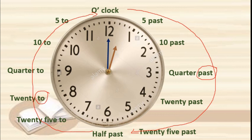And when the minute hand reaches 12, the hour hand will be on 1, so it is 1 o'clock. This direction is called the clockwise direction. When the minute hand moves from 12 to 6, we use the word 'past'. When it moves further from 6 to 12, we use the word 'to' — meaning that many minutes are left. This is called clock language: quarter past, half past, quarter to, and o'clock.